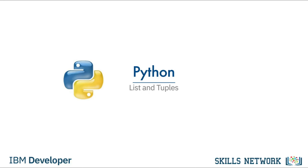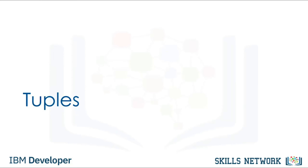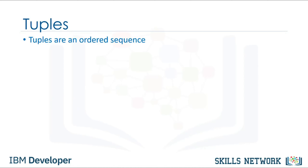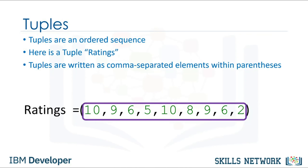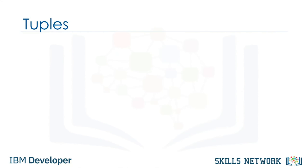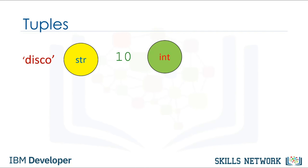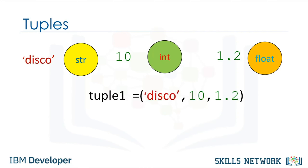In this video, we will cover lists and tuples — compound data types and key data structures in Python. Tuples are an ordered sequence. Here is the tuple ratings. Tuples are expressed as comma-separated elements within parentheses. Strings, integers, and floats can all be contained in a tuple, but the type of the variable is tuple.